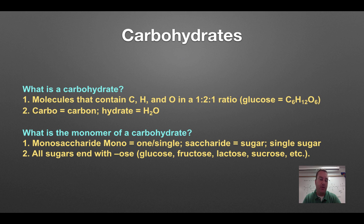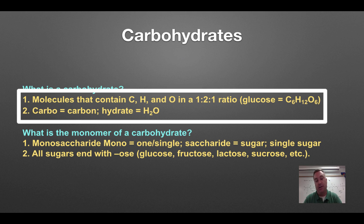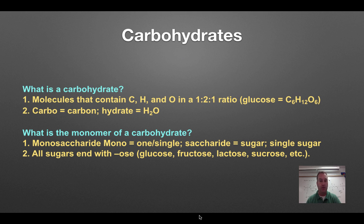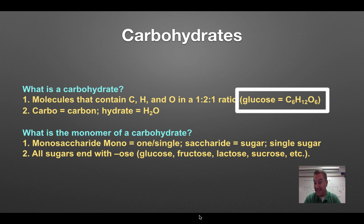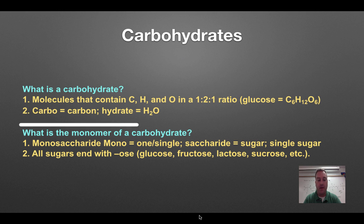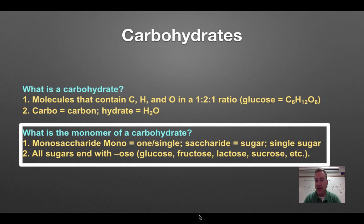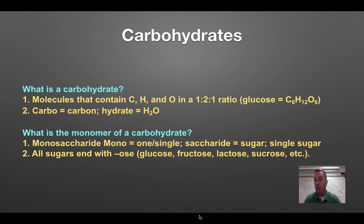Carbohydrates are molecules that have carbon, hydrogen, and oxygen in them. The carbo refers to carbon, and the hydrate refers to hydrogen and oxygen because that's what makes up water. So you have a one-to-two-to-one ratio. A perfect example would be glucose, C6H12O6 — that's a one-to-two-to-one ratio, with twice as many hydrogens as oxygens. The monomer of a carbohydrate is called a monosaccharide. Mono means single or one, saccharide refers to sugar — so a monosaccharide is a single or simple sugar. All sugars are going to end with -ose, so think of glucose, sucrose, maltose, lactose, etc.